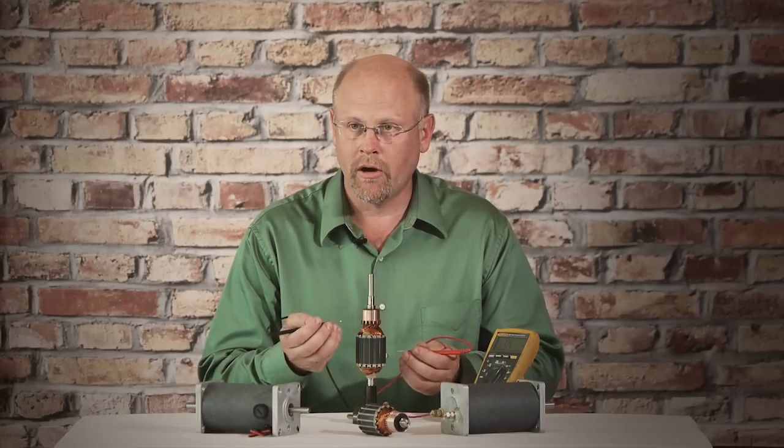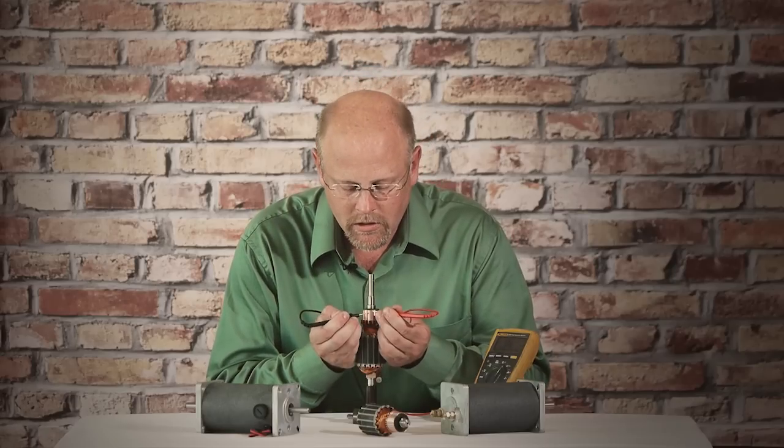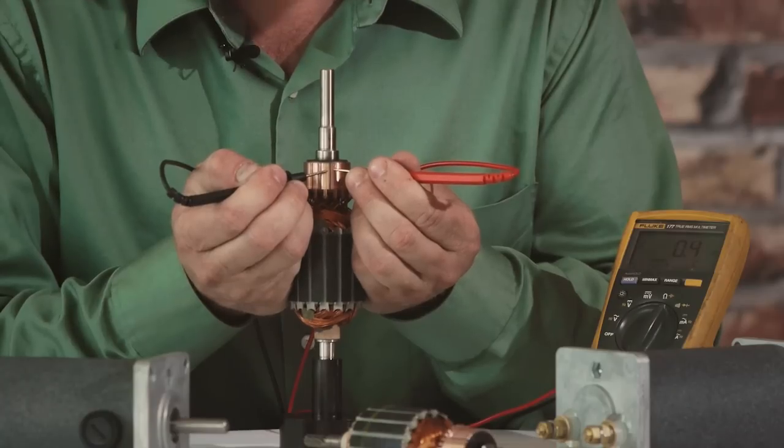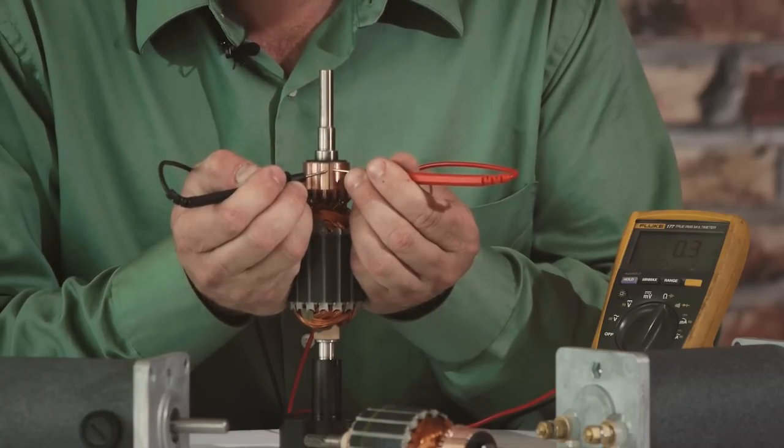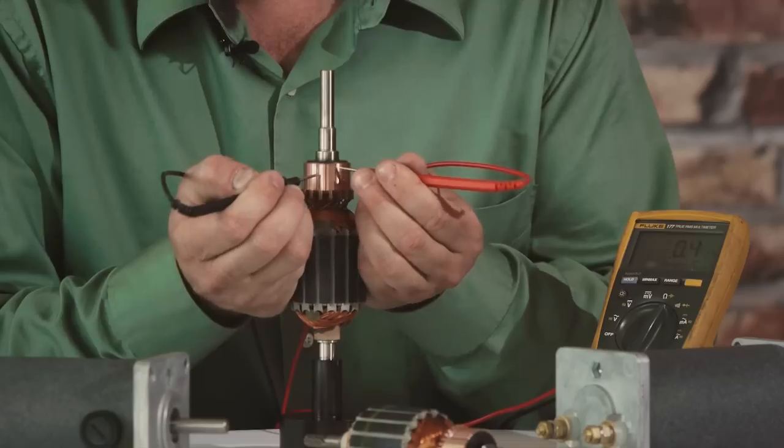The next test we'll do is a bar-to-bar test, which measures each individual loop. And again, as the name implies, the bars adjacent to each other. We measure three tenths of an ohm, four tenths.